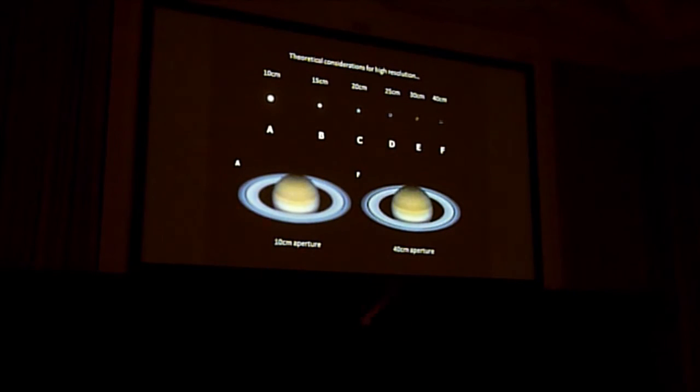Along the top you can see star images produced from different sized telescopes. It also illustrates the bigger the telescope, the smaller the star image becomes, because it's able to resolve finer detail.